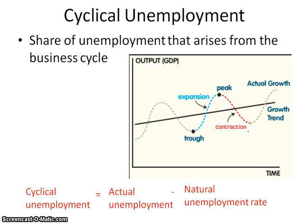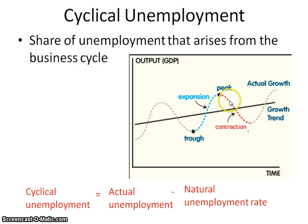Cyclical unemployment is what the actual unemployment rate is minus the natural unemployment rate expected from frictional and structural unemployment. This lets you see what's happening with unemployment during different phases of the business cycle. During the expansionary or recovery phase, unemployment goes down because times are good and businesses tend to hire more. During the contractionary or recessionary phase, unemployment increases because times are not as good and businesses are not employing as many people.